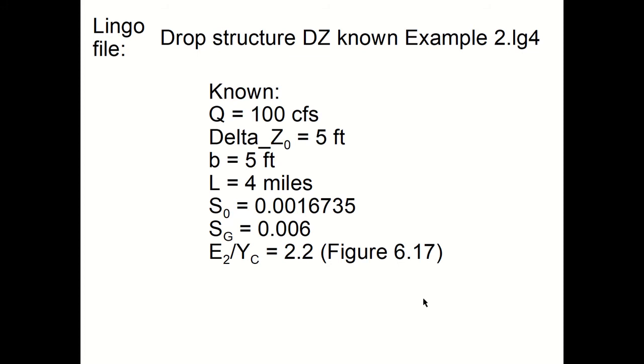L equals 4 miles, the bottom slope of the constructed channel S0 would be 0.0016735, the bottom slope of the ground is 0.006, and then using Figure 6-17, we have a first estimate of E2 divided by Yc equals 2.2.